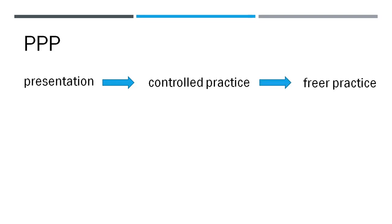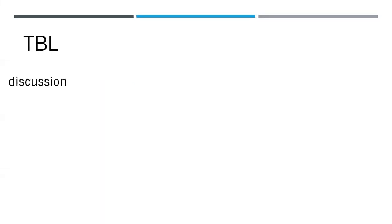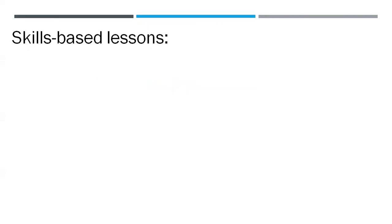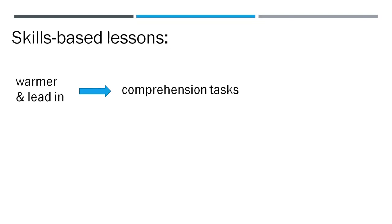PPP stands for Present, Practice and Produce — freer practice stands for producing the language independently. TBL stands for task-based learning. It typically starts with a discussion, then comes several tasks, then the discussion becomes the presentation and then we focus on form — kind of an inverted PPP. Skills-based lessons typically contain a warmer or a lead-in or maybe both, then some comprehension tasks like questions that check students' comprehension of a text, and post-task activities where we could work with the language, speculate on the content, or produce our own texts.